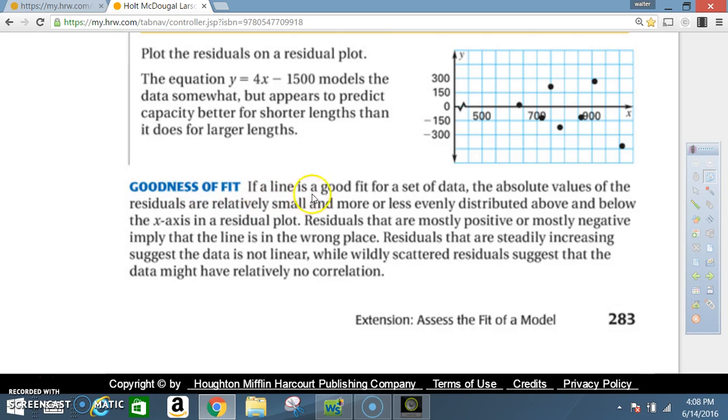Goodness of fit: If a line is a good fit for a set of data, the absolute values of the residuals are relatively small and are more or less evenly distributed above and below the x-axis in a residual plot. Residuals that are mostly positive or mostly negative imply that the line is in the wrong place. Residuals that are steadily increasing suggest that the data is not linear, while widely scattered residuals suggest that the data might have relatively no correlation.